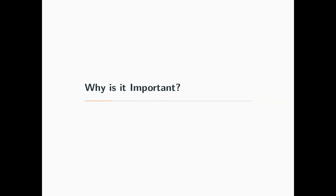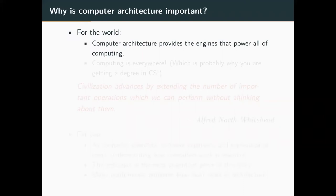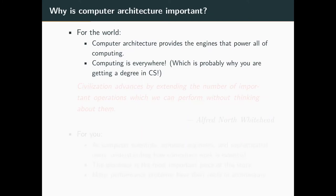So why is any of this important? Why is it important to you, a future software engineer or computer scientist? If we don't have computer architecture, we don't have computers. You're probably getting a CS degree because you've realized that everyone needs to compute something sometime. It really is everywhere, and with IoT coming into its own, we're going to have computers literally everywhere. If we don't have the architecture to back it up, we're going to be in big trouble.